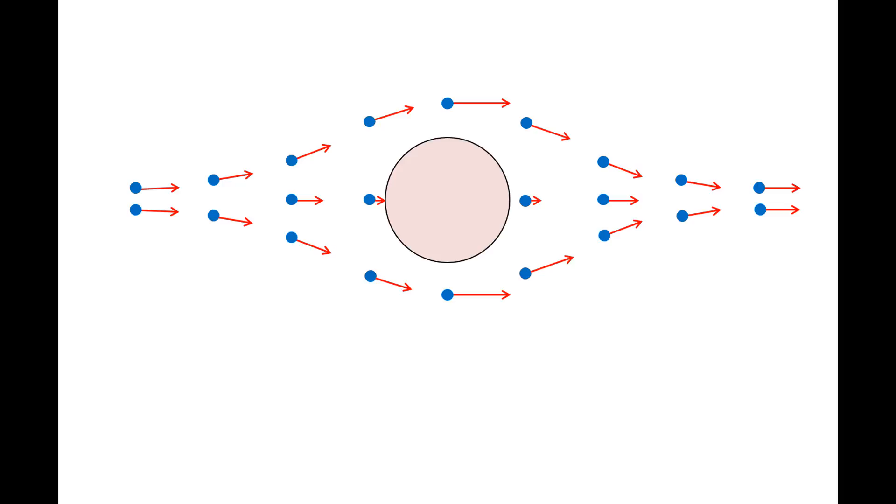Here we have a ball that is traveling to the left through a fluid. Now we will show some of the surrounding fluid elements. If we attach our reference frame to the ball, the ball appears stationary and the fluid appears to be flowing toward the right, as shown by the red velocity vectors.